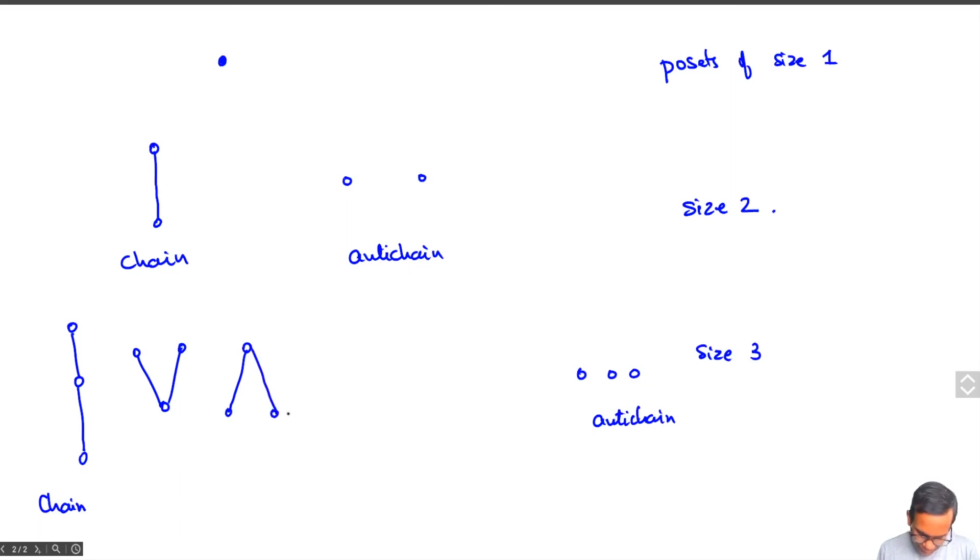And then there is this one. So there's one, two, three, four, five partially ordered sets of size three up to isomorphism.